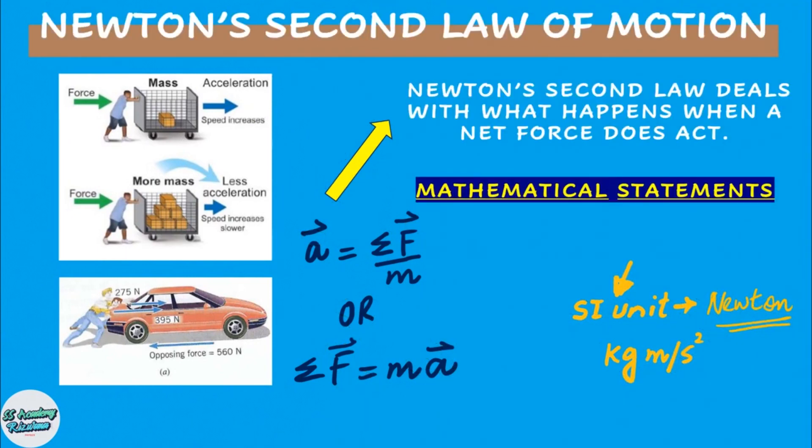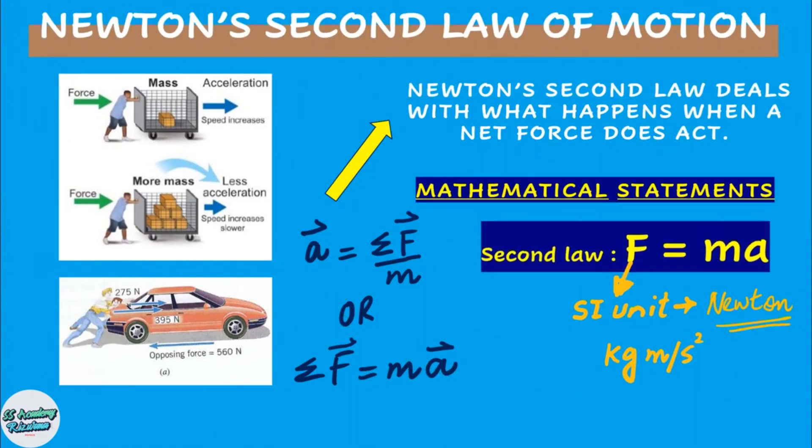Newton's second law of motion states that when a net external force sigma F acts on an object of mass M, the acceleration A that results is directly proportional to the net force and has a magnitude that is inversely proportional to the mass. The direction of the acceleration is the same as the direction of the net force, or sigma F equals M times A.